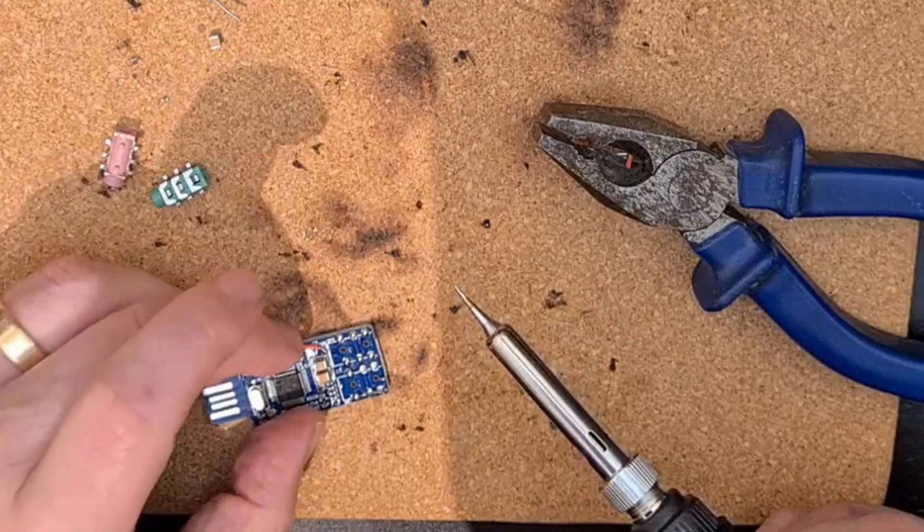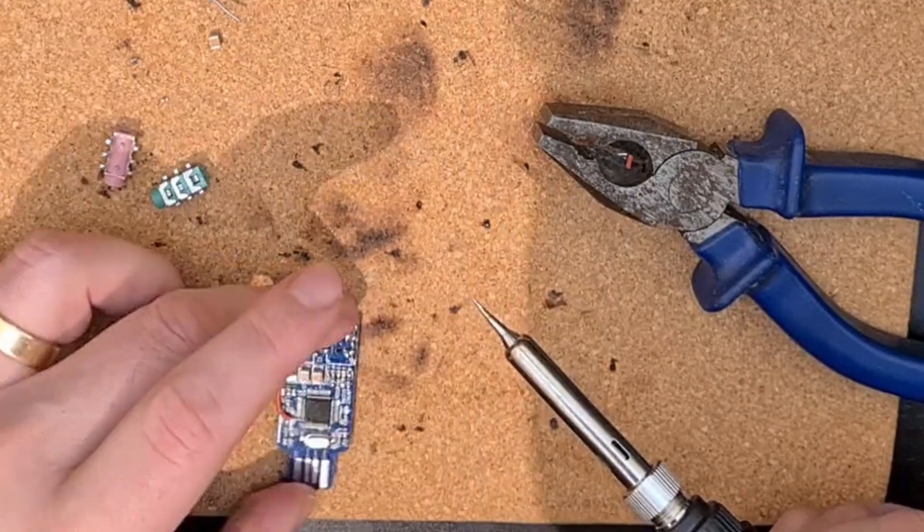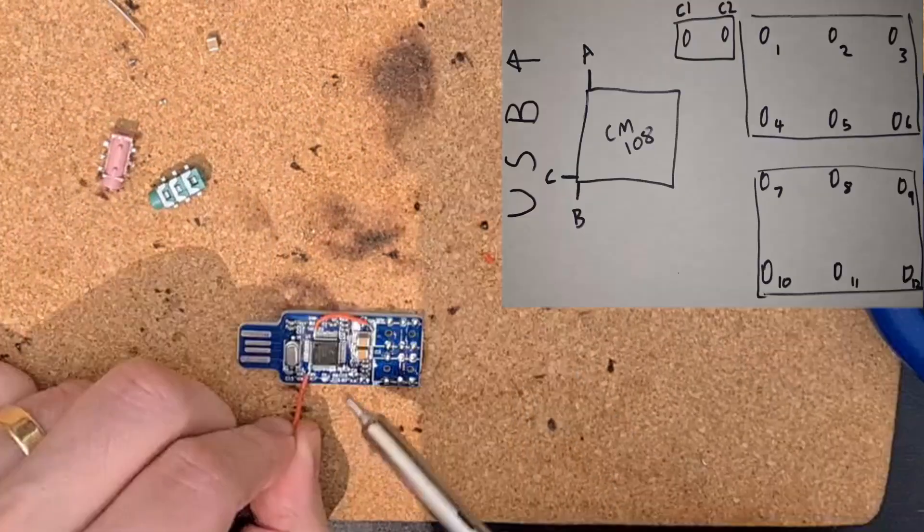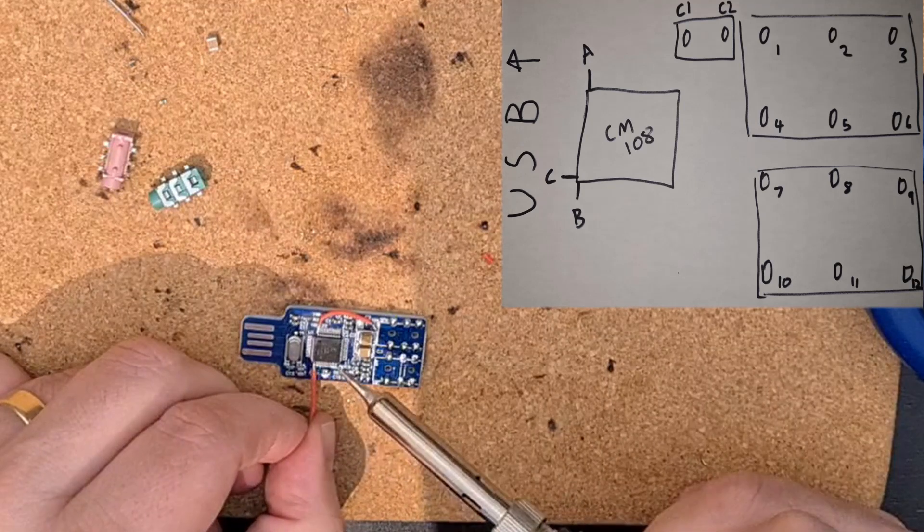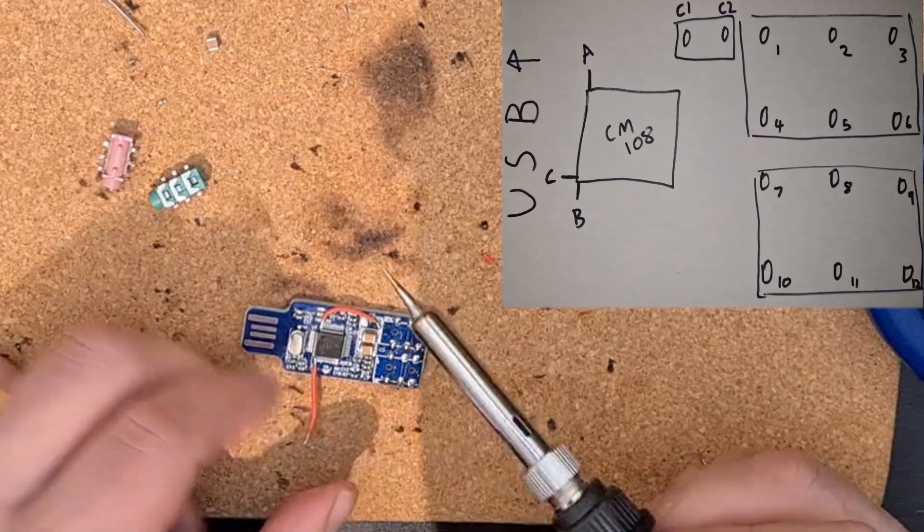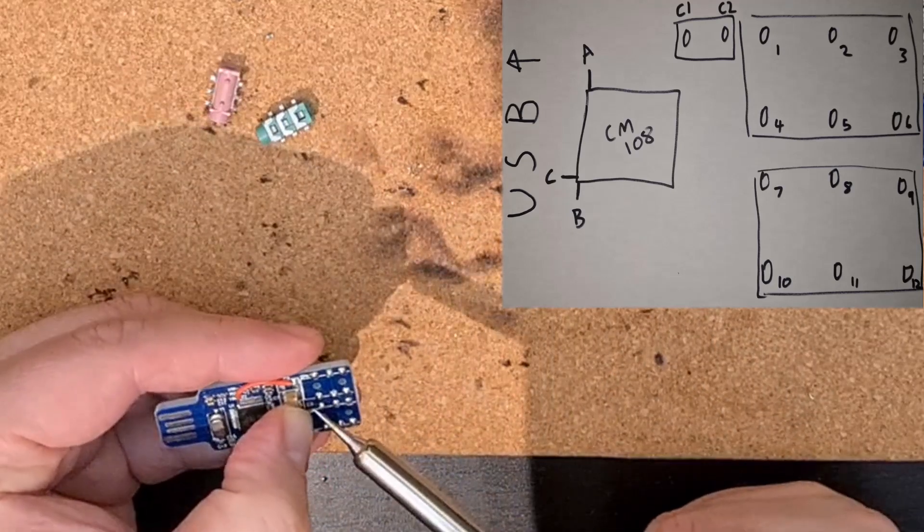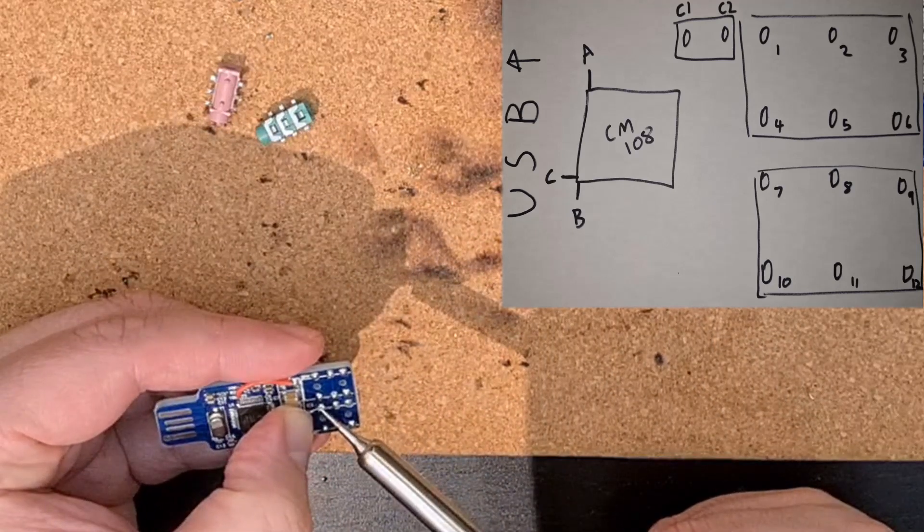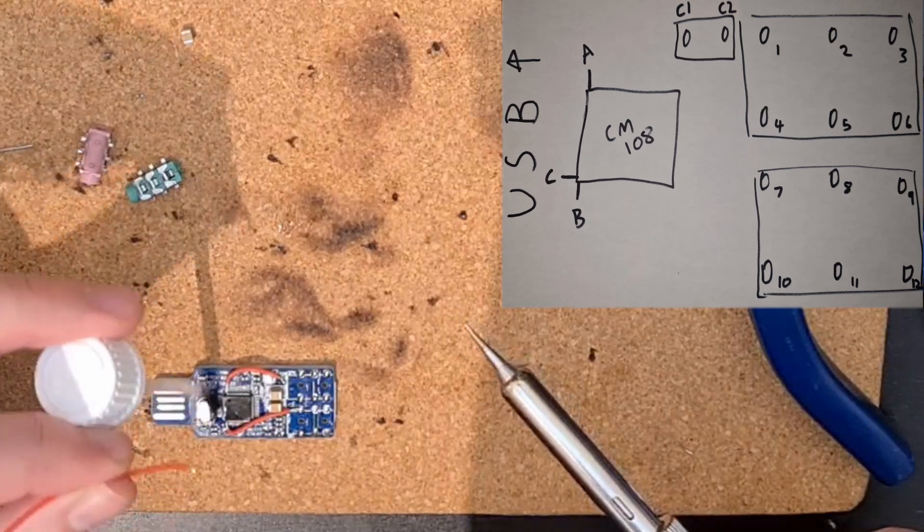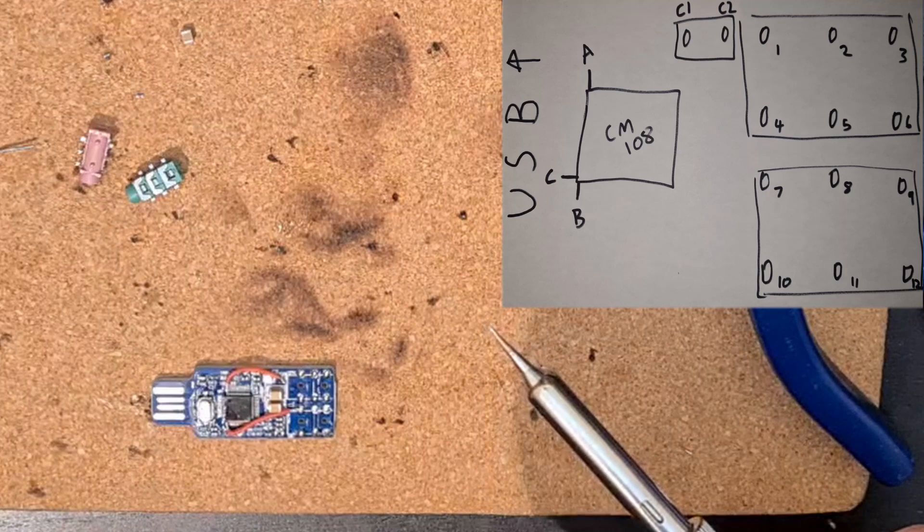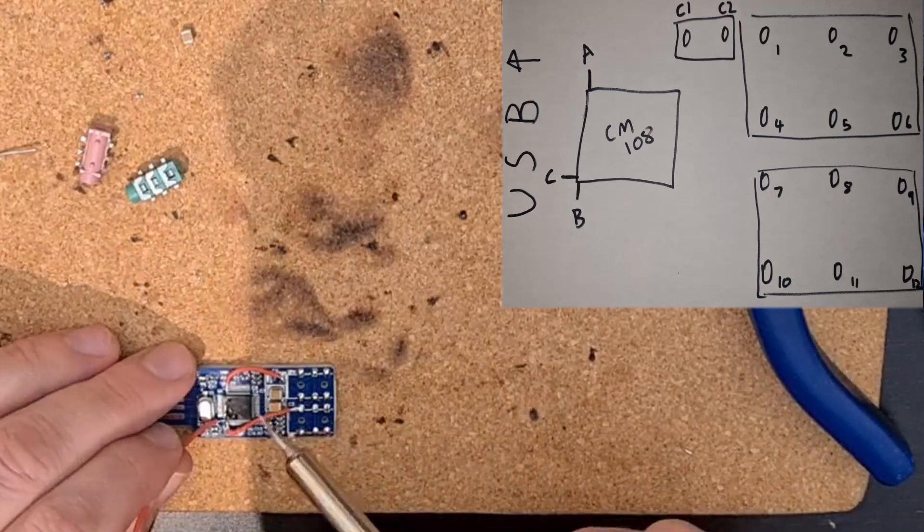Next we're going to do exactly the same again from the CM108 on what I am calling pin B, opposite down at the bottom there. Again, well tin 30 gauge wire, hold the soldering iron on for about a second, lift it off again, and then bring that over to pin 7. Lots of flux on this.